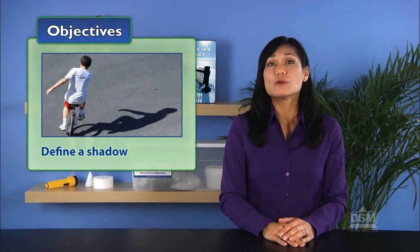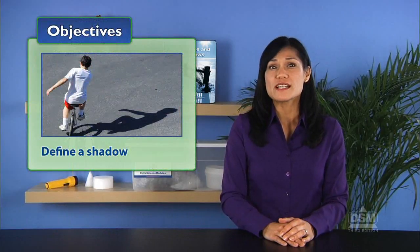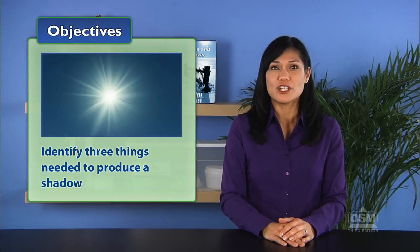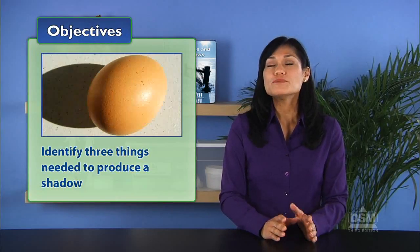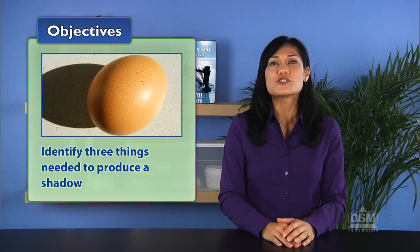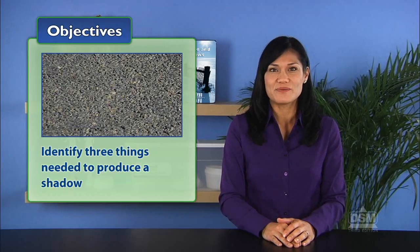In Activity 1, 'What is a Shadow?' students go outdoors on a sunny day to observe and describe a shadow. They first define what a shadow is and then identify three things needed to produce a shadow: sunshine, an object to block the light, and a surface on which the shadow is cast.